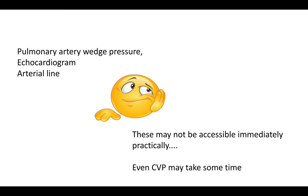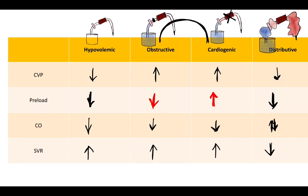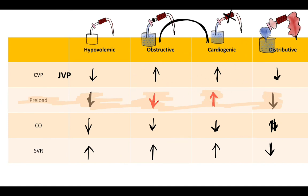Pulmonary artery wedge pressure, echocardiogram, and arterial lines may not be immediately accessible, especially in a rural or resource-limited hospital. CVP measurement may also take time. In that case, use JVP as a bedside surrogate: if JVP is elevated, think obstructive or cardiogenic shock.